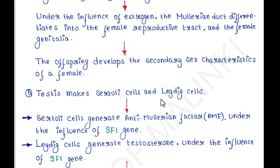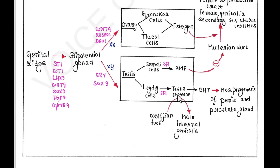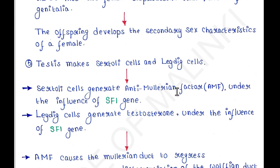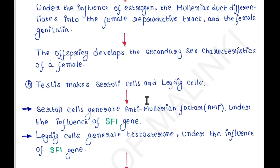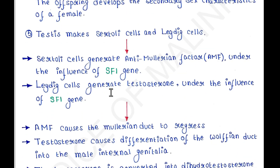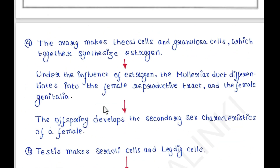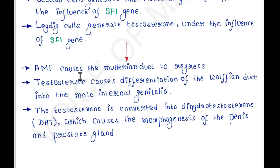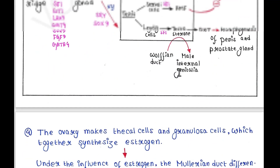The testis makes Sertoli cells and Leydig cells. Sertoli cells generate anti-Müllerian factor (AMF) under the influence of the SF1 gene. AMF causes the Müllerian duct to regress.